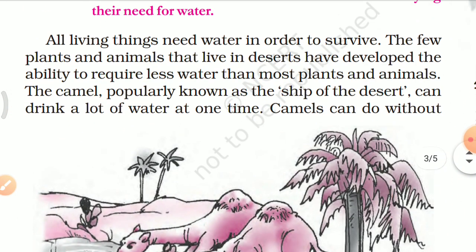All living things need water in order to survive. The few plants and animals that live in deserts have developed the ability to require less water than most plants and animals. Some can live with very little water, or even without water.